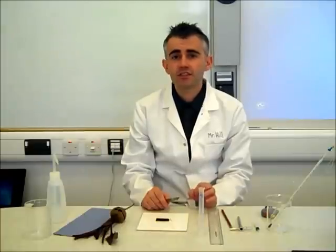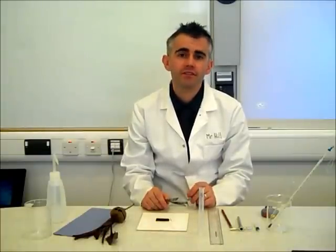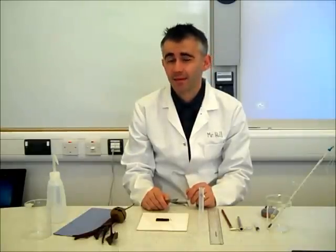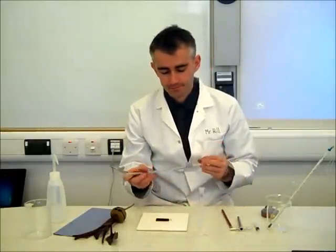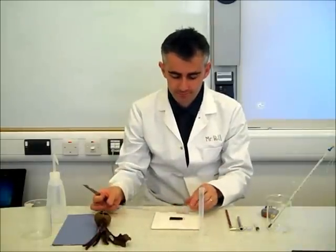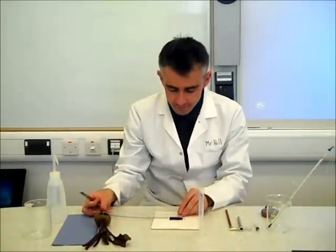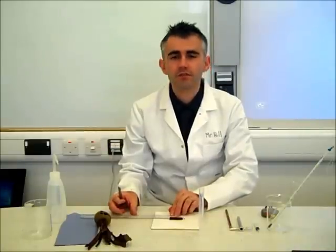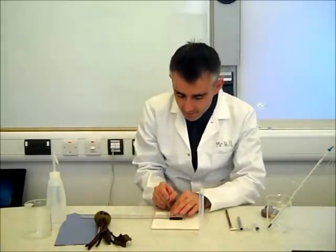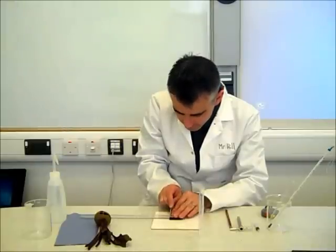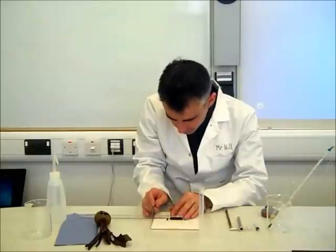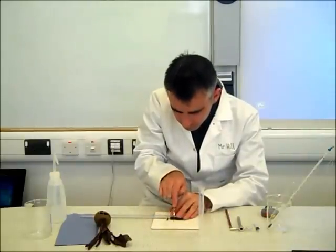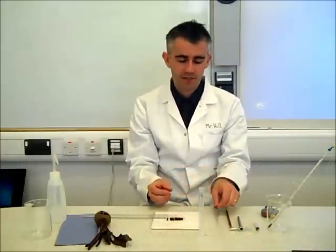When doing this investigation, you will want a minimum of five different temperatures across a range — ideally eight temperatures. We're going to use six. Using a ruler, I'm going to cut a section of the beetroot which is one centimetre in length. Be very careful when using a scalpel as it is very sharp.